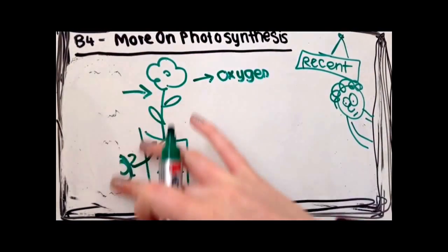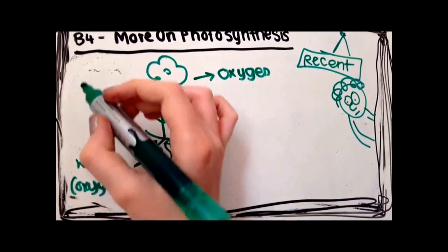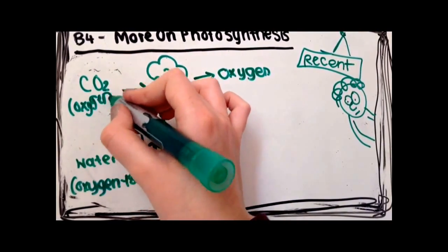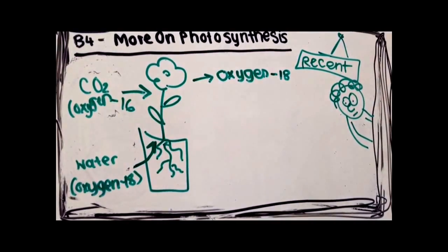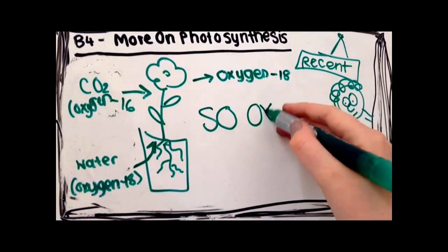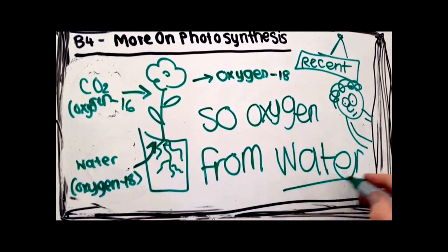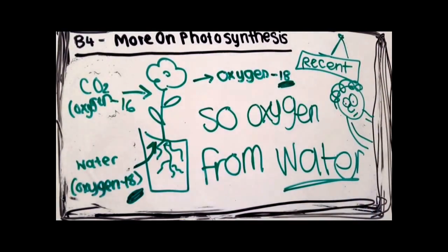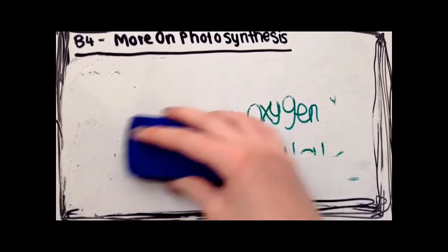To test this, scientists supplied plants with water containing an isotope of oxygen called oxygen-18. The carbon dioxide the plants received contained ordinary oxygen-16. And so when the plant photosynthesised, it released oxygen-18. And this showed that the oxygen came from the water that was supplied to the plant, not the carbon dioxide.